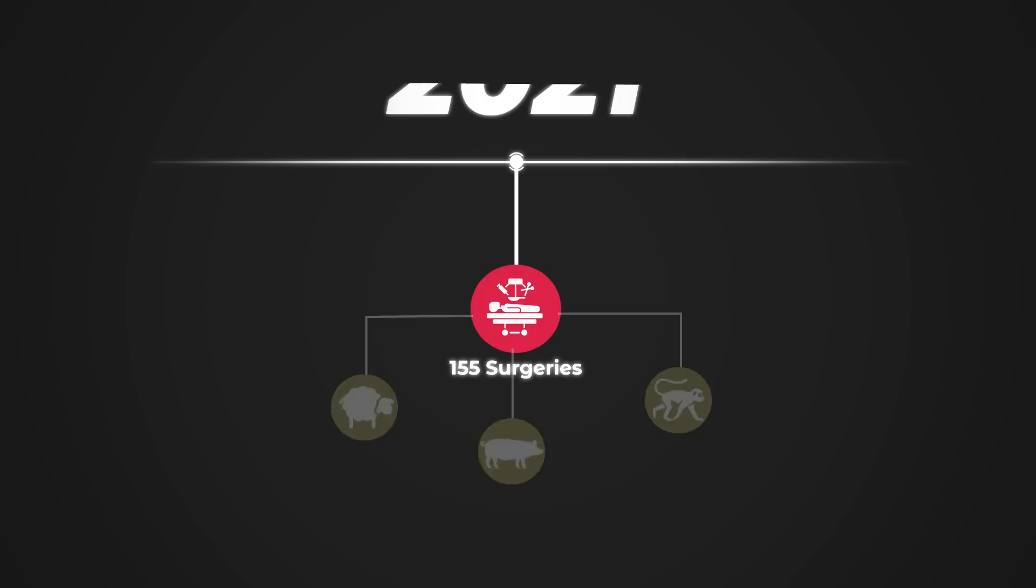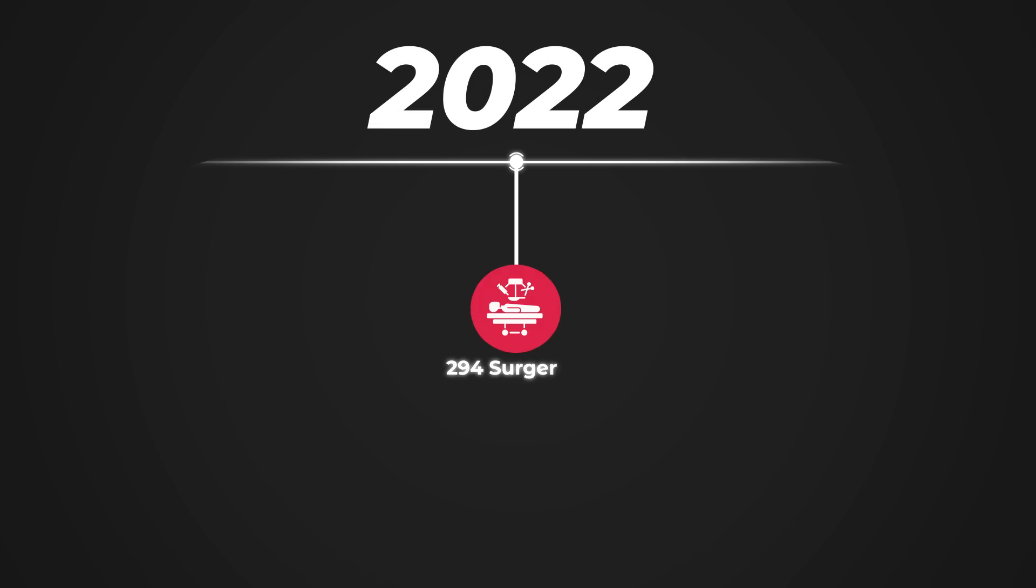In 2021, Neuralink performed a total of 155 surgeries on sheep, pigs, and monkeys. In 2022, that number grew to 294 total surgeries.